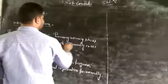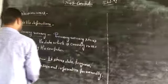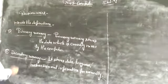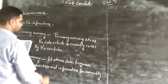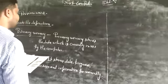Next we will give you information about primary memory. Primary memory stores the data which is currently used by the computer. Secondary memory stores the data, programs, the instructions and information permanently.